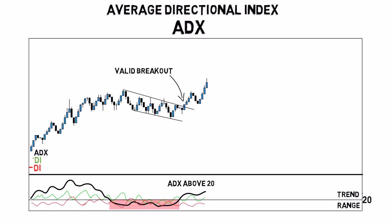The minus DI and plus DI lines are used to determine the direction of a trend. If the plus DI line is on top, it suggests that the price is trending upwards. If the minus DI line is on top, the price is trending downwards.